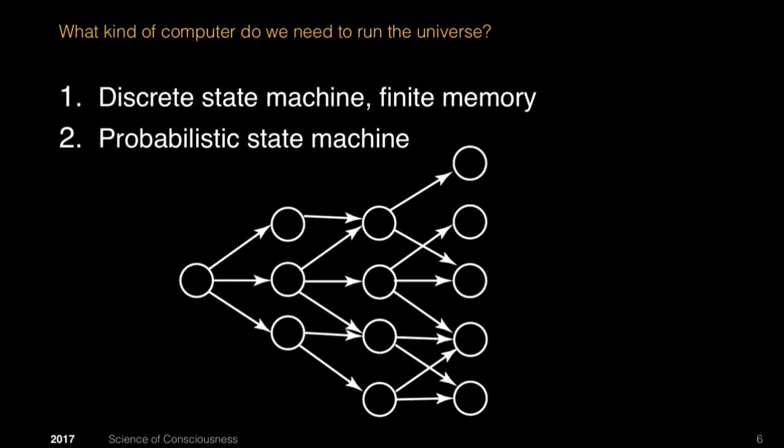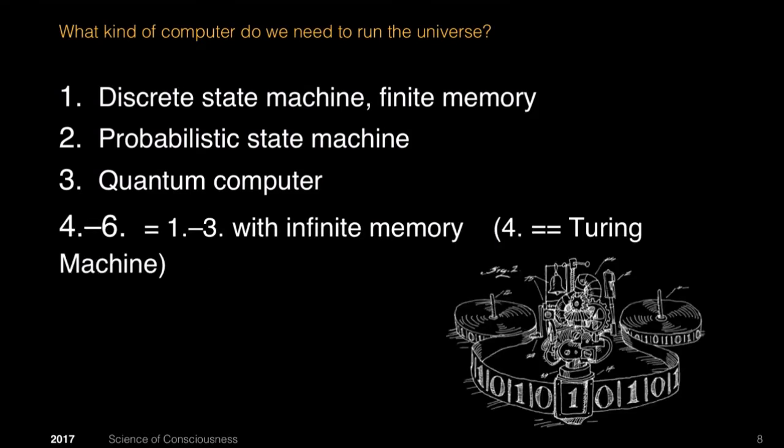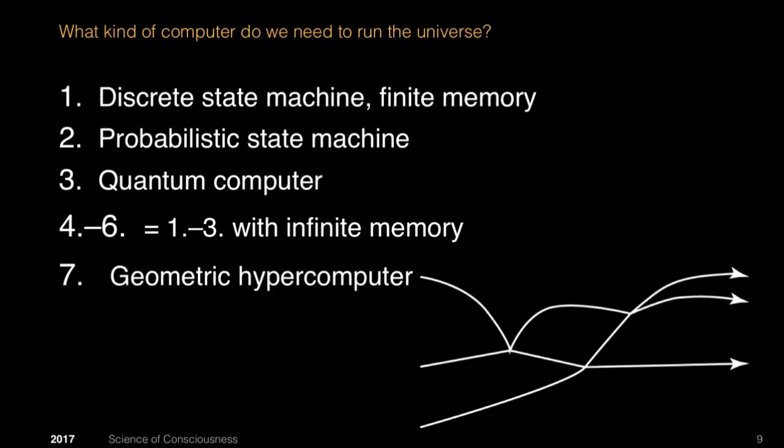It could be probabilistic, which means you can branch between the states with some probability function, or it could be a quantum computer in which each state can be a superposition of states. Or maybe this is not enough and maybe we need one of these three versions with infinite amounts of memory. This is going to be infinitely more expensive, but it could get even worse. If it has infinite memory, that's your Turing machine as we know it from the usual definitions of computation.